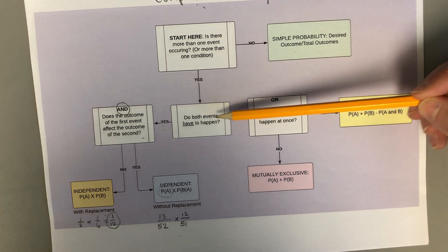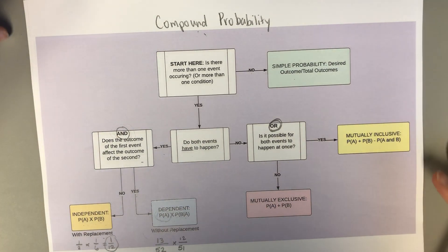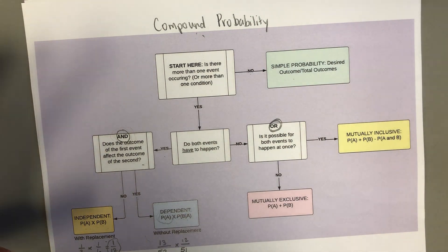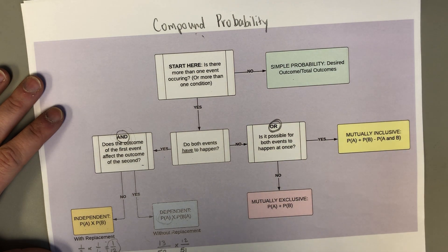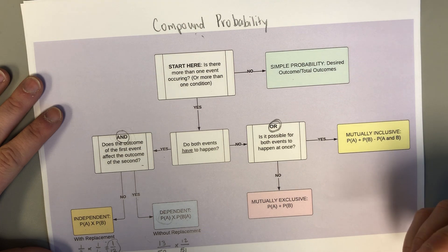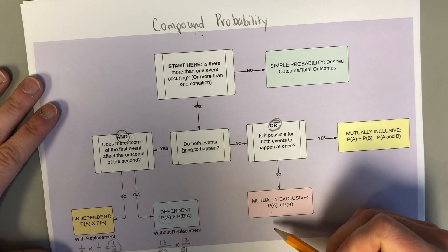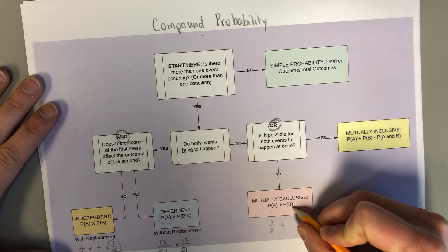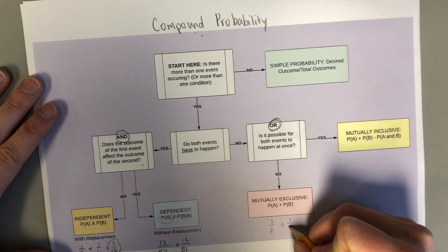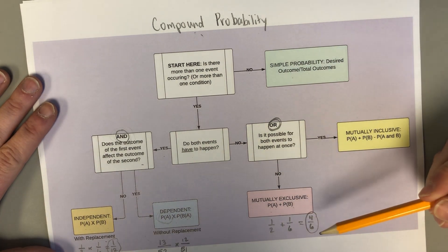If you say no to "do both events have to happen," the keyword you'll see is "or." "Or" means there are two scenarios or criteria, but only one needs to happen to be successful. Then ask: is it possible for both events to happen at once? If no, that's mutually exclusive. For example: what's the probability that you flip heads on a coin or roll a four on a dice? We only need one to happen. The probability of heads is one-half, plus the probability of rolling a four is one-sixth. One-half equals three-sixths, so adding gives four-sixths as the final probability. Mutually exclusive means it's impossible for both things to happen at the same time.